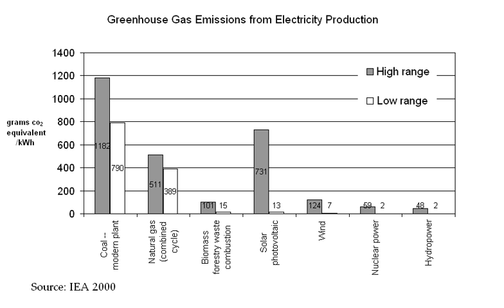Acidification lowers the level of carbonate ions available for calcifying organisms to form their shells. These organisms include plankton species that contribute to the foundation of the Southern Ocean food web. Acidification may also impact on a broad range of other physiological and ecological processes, such as fish respiration, larval development, and changes in the solubility of both nutrients and toxins.